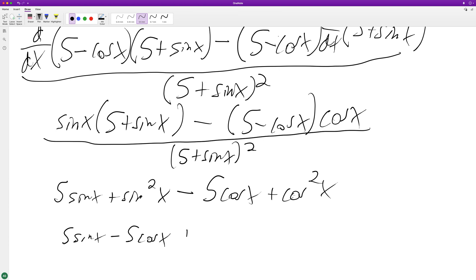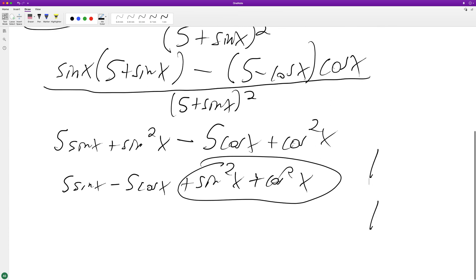This is a trig identity, it's equal to 1. So we have 5 sine of x minus 5 cosine of x plus 1, all over 5 plus sine of x squared. And that's pretty much it.